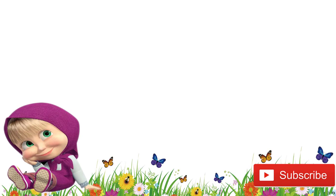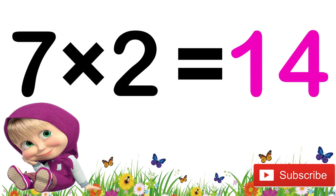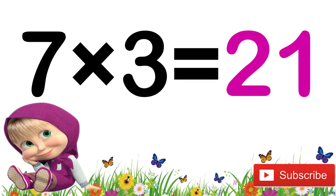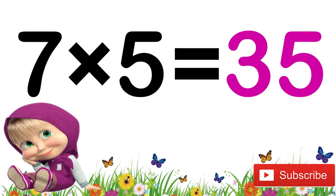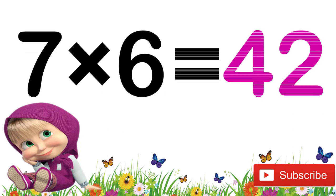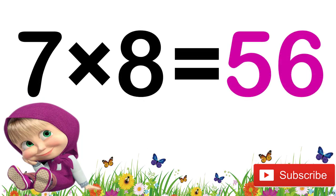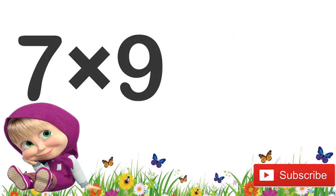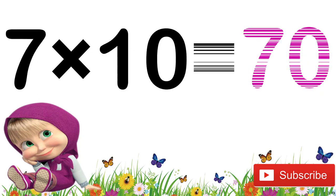Now let's revise again children. 7 ones are 7. 7 twos are 14. 7 threes are 21. 7 threes are 21. 7 fours are 28. 7 fours are 28. 7 fives are 35. 7 fives are 35. 7 sixes are 42. 7 sixes are 42. 7 sevens are 49. 7 sevens are 49. 7 eights are 56. 7 nines are 63. 7 tens are 70.